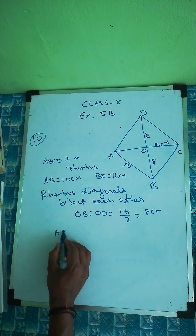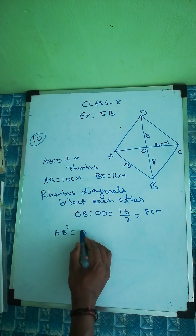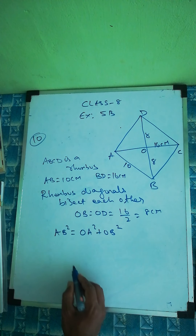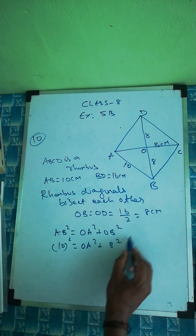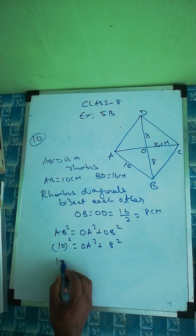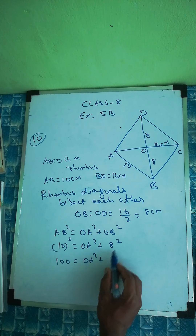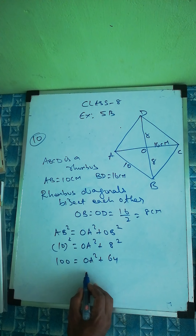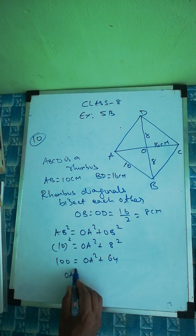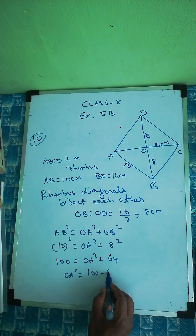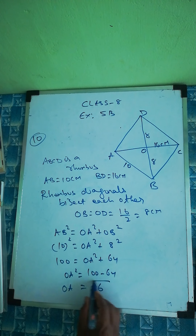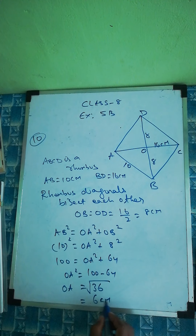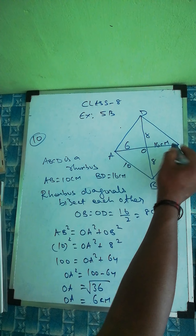By the Pythagorean theorem: AB squared equals OA squared plus OB squared. So 10 squared equals OA squared plus 8 squared, giving 100 equals OA squared plus 64. Therefore OA squared equals 100 minus 64 equals 36, so OA equals 6 centimeters.